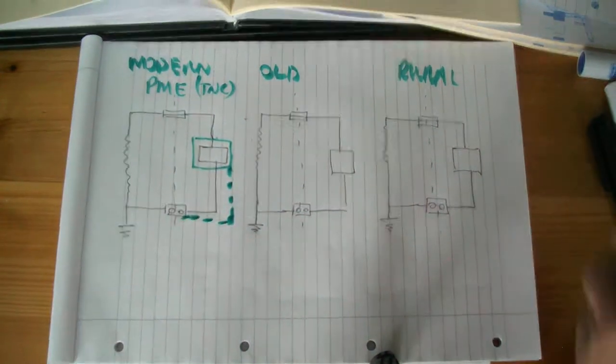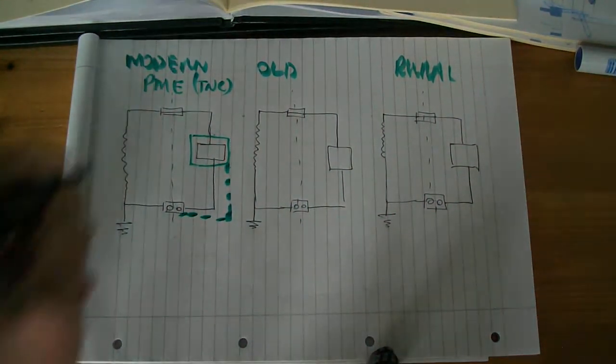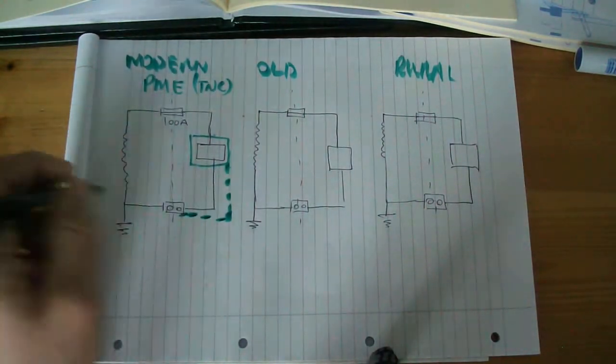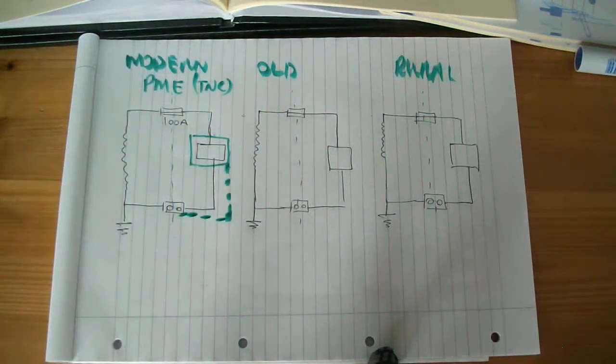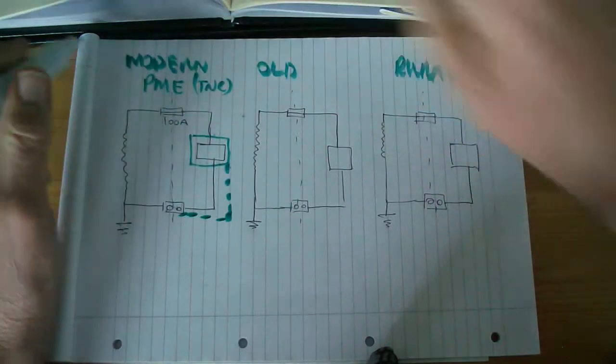Typically that is 100 amps. I'll just write that in. Typically 100 amps and this is just a link. The earth is connected directly to the terminal.